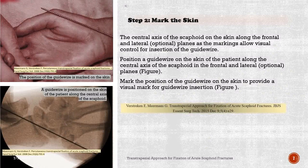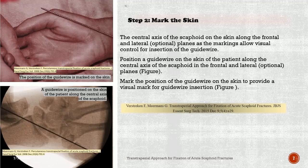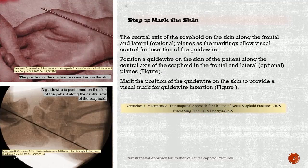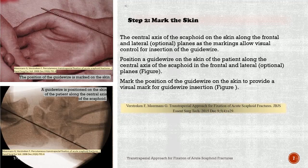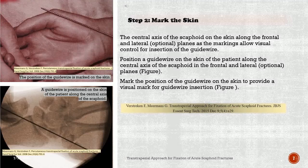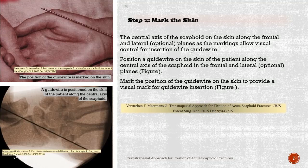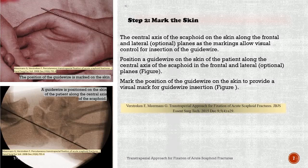Step 2: Mark the skin. Mark the central axis of the scaphoid on the skin along the frontal and lateral planes, as the markings allow visual control for insertion of the guide wire. Position a guide wire on the skin of the patient along the central axis of the scaphoid in the frontal and lateral planes. Mark the position of the guide wire on the skin to provide a visual mark for guide wire insertion.